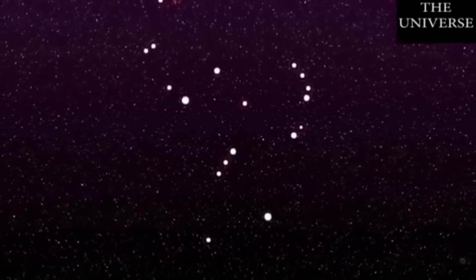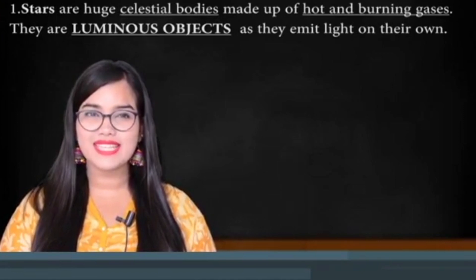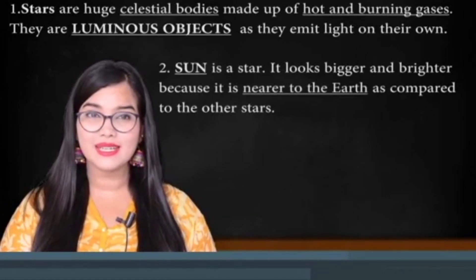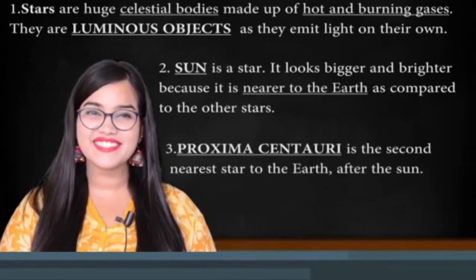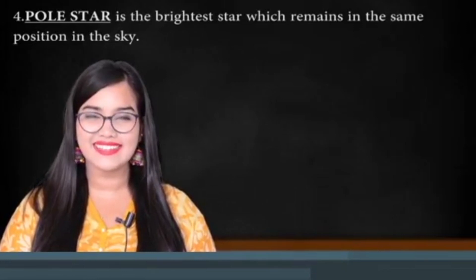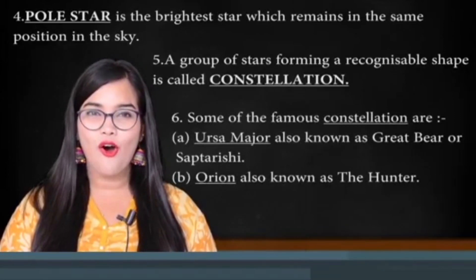Another famous constellation you can find in the sky is Orion, also known as the Hunter. Let's quickly summarize: stars are huge celestial bodies made up of hot and burning gases, and they are luminous objects that emit light on their own. The Sun is a star that looks bigger and brighter because it is nearer to the Earth. Proxima Centauri is the second nearest star to the Earth after the Sun. The Pole Star is the brightest star that remains in the same position in the sky. A group of stars forming a recognizable shape is called a constellation. Famous constellations include Ursa Major (the Great Bear or Sapta Rishi) and Orion (the Hunter).